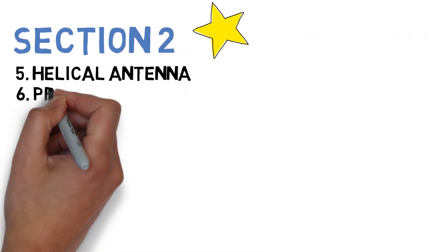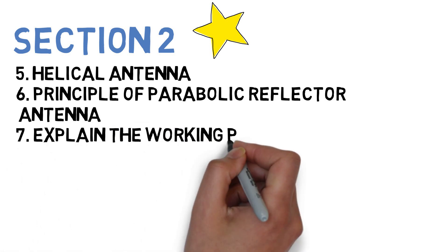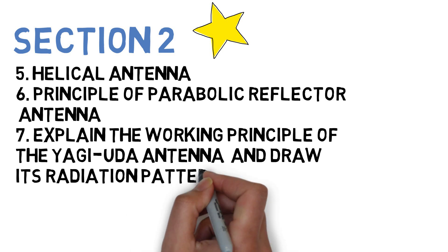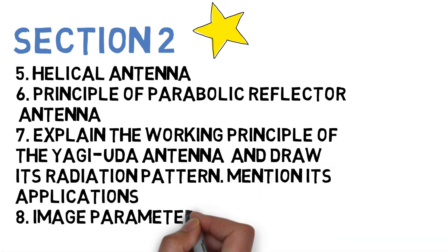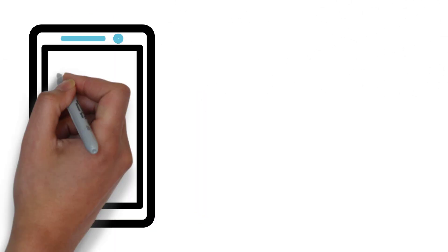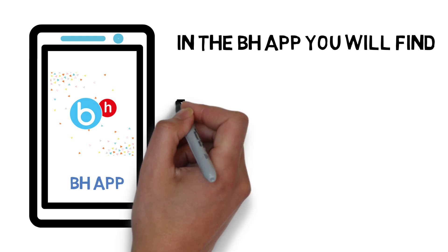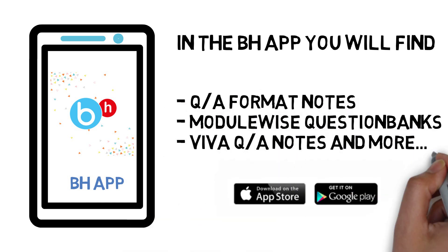For Section 2, the four questions are: helical antenna, principle of parabolic reflector antenna, working of Yagi-Uda antenna with its radiation pattern and applications, and the image parameter method. Note that all detailed questions and solutions for these concepts are already available in the Brain Eaters app — you can definitely go and check them out.